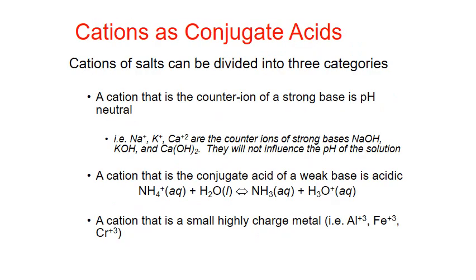If the anion of a salt is a conjugate base that can potentially turn a solution basic, then the cation of a salt is a conjugate acid that can potentially turn a solution acidic. We can generally divide cations into three categories in terms of their strength as a conjugate acid. Cations that are the counter ion of a strong ionic base are considered pH neutral and will not act as an acid in solution. These include the alkali and alkaline earth metal cations such as sodium, potassium, and calcium — the counter ions of strong bases like sodium hydroxide, potassium hydroxide, and calcium hydroxide.